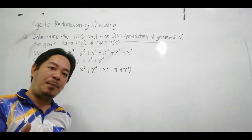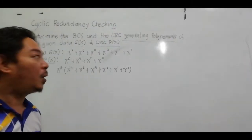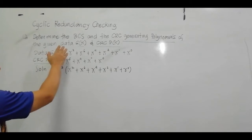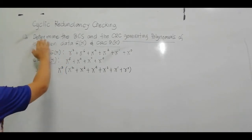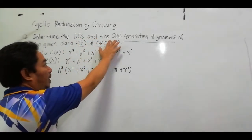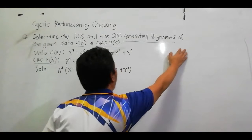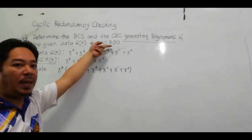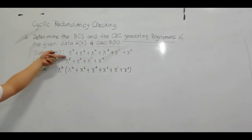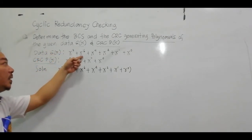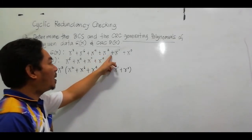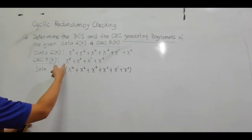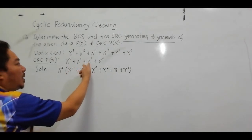Today everyone, we have here the topic CRC-16, or what we call Cyclic Redundancy Checking. So question number one: determine the block check sequence and the CRC generating polynomial of the given data GX and your CRC DX. Our data GX is X^7 + X^6 + X^4 + X^2 + X^1 + X^0. Our CRC DX is X^5 + X^4 + X^3 + X^0.